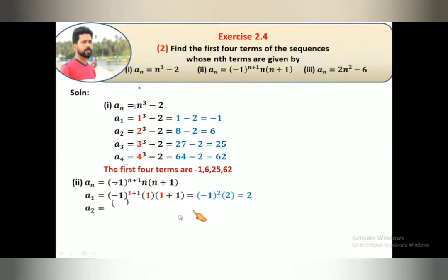Second term, a₂, n = 2. So this is (-1)^3 · (2+1) which is 3 · 2 equals 6. The power is an odd number and the answer is minus. Power is even number answer is positive, power is odd number negative answer. So it's -6.